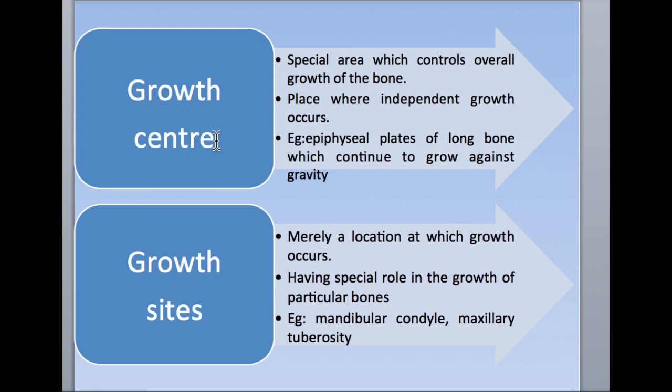Whereas the growth site — only a part of a bone is formed because of a growth site. Because of growth in one part of the bone, there may be displacement of that particular bone — primary displacement or secondary displacement is also based on this concept. So the growth center is a special area which controls the overall growth of the bone, whereas the growth site is merely a location in the bone itself where growth occurs.